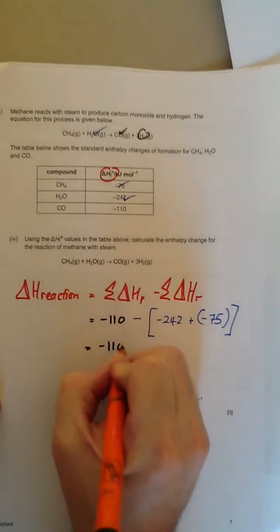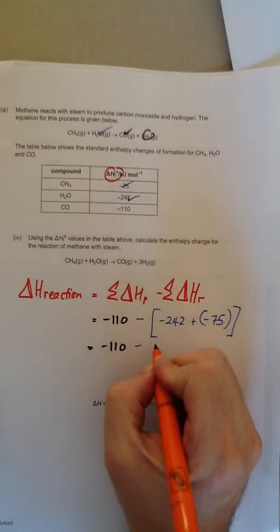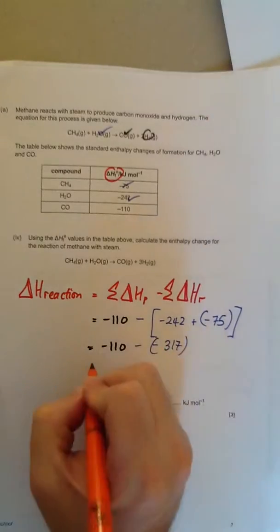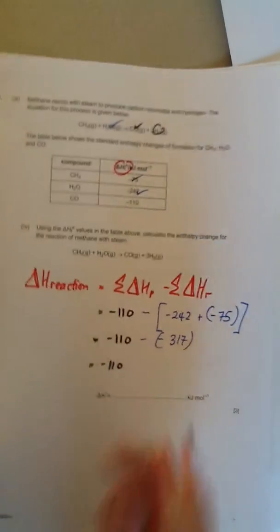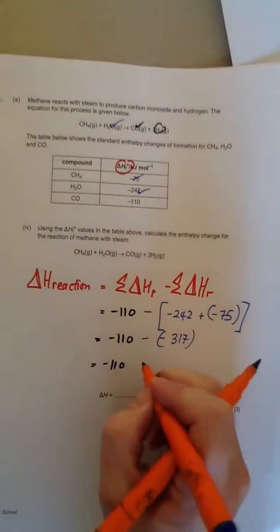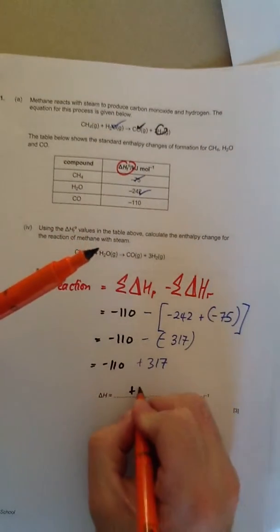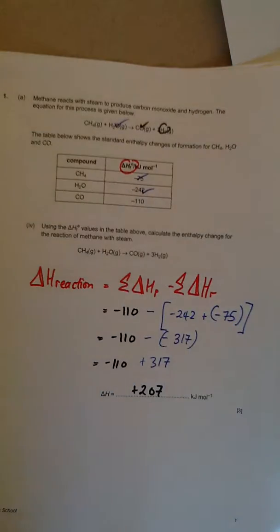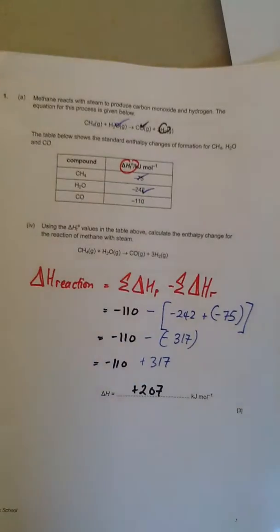So that's minus 110 minus minus 317, which equals minus 110 plus 317, and that is plus 207. So 322 per mole. Important thing is to keep the plus sign in because it shows it's an endothermic process.